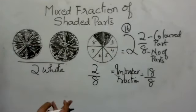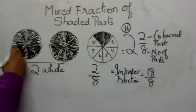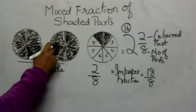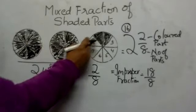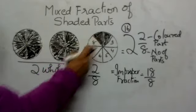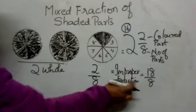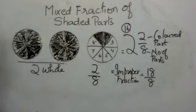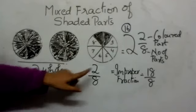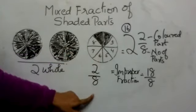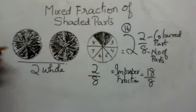Suppose you want to check your improper fraction, you can also add the parts. Here already eight plus eight is sixteen parts colored, plus two more parts, that equals eighteen parts. So eighteen by eight. Now you understand how to create the mixed fraction as well as the improper fraction.